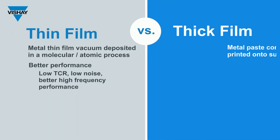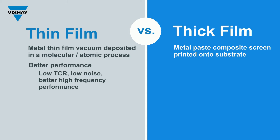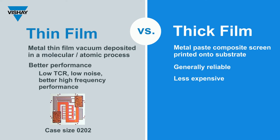Thick-film is a metal powder resin composite that is screen printed. Thick-film is generally a reliable solution, less expensive, and used when tight requirements are not critical. For example, a thin-film resistor can have a tolerance as low as 0.1%, while the best tolerance in a thick-film application is typically 1%. Also, a 0.2×0.2 case-sized thin-film resistor can handle 250 milliwatts of power,